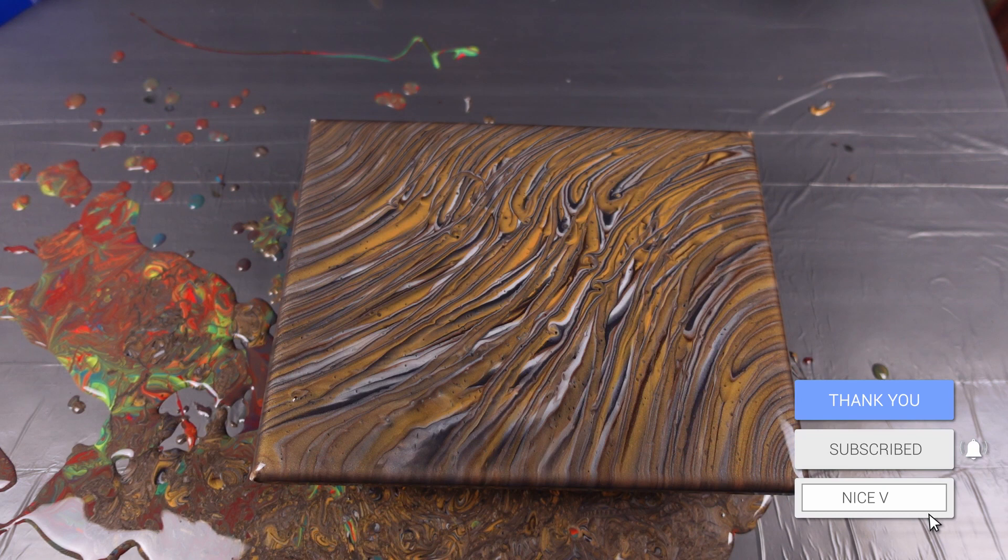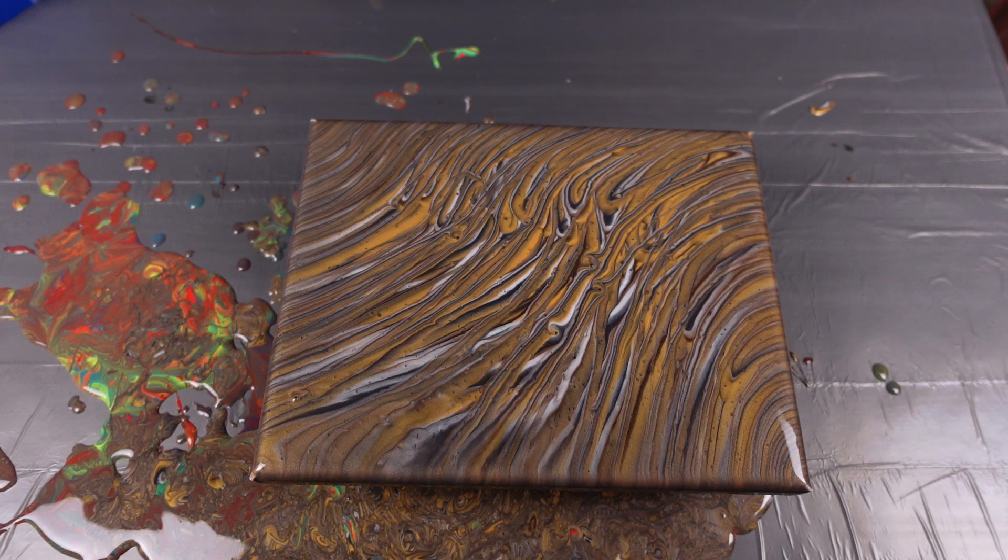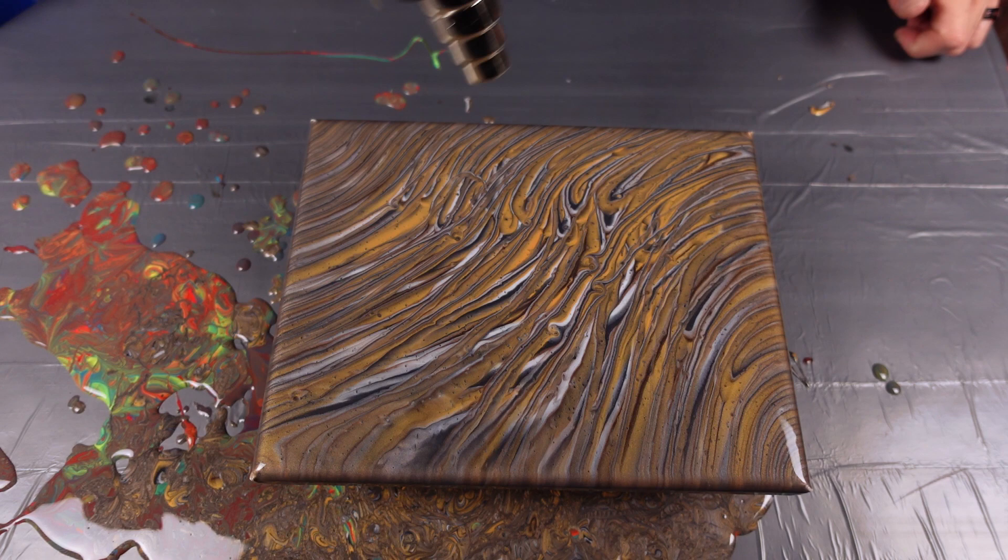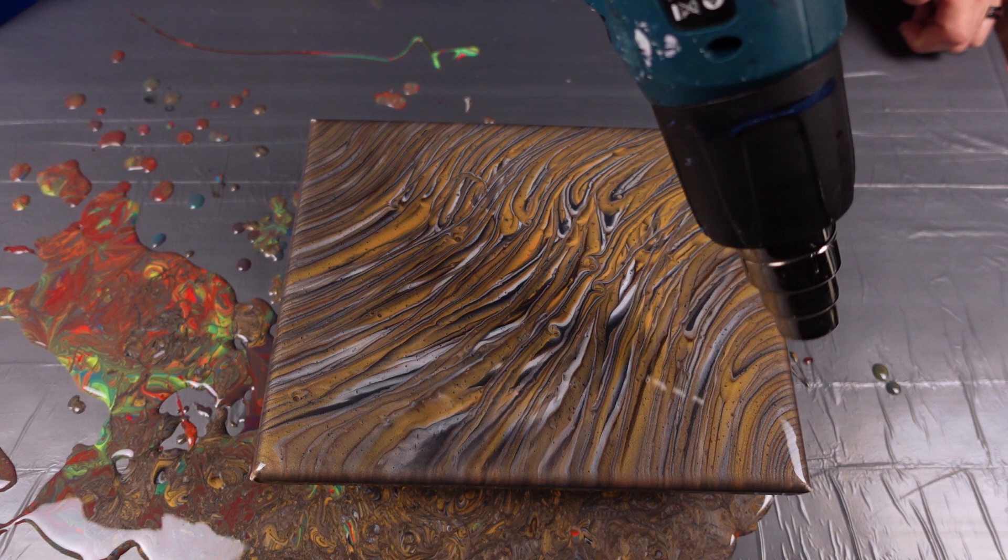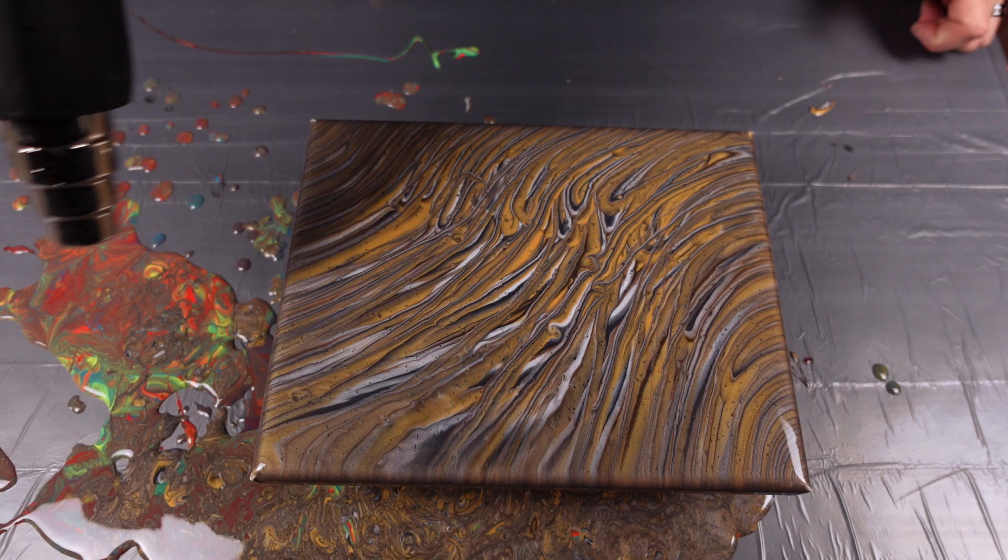And one way to avoid the bubbles, I don't know if you can see them, but let your paint sit for a little bit longer so the bubbles can work to the surface of the paint. That is one way. I was too excited after I painted this last one and I kind of just wanted to get started right now, so I did.